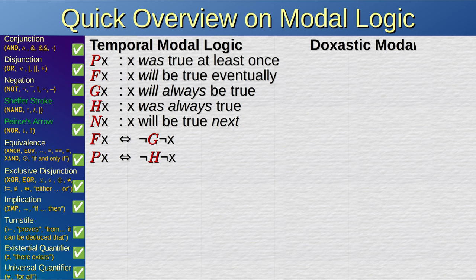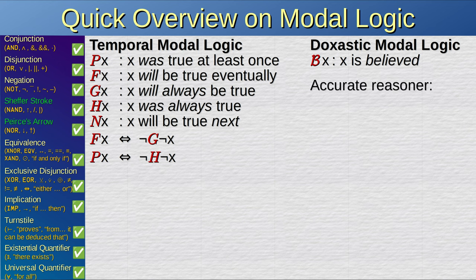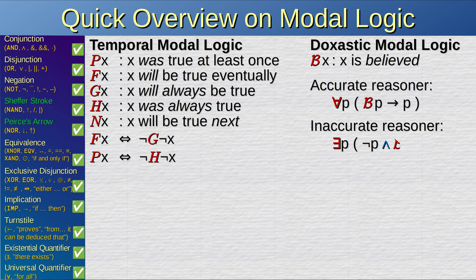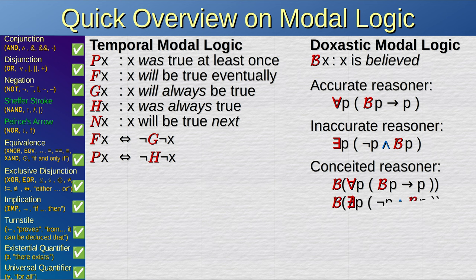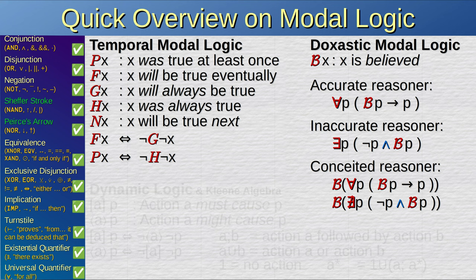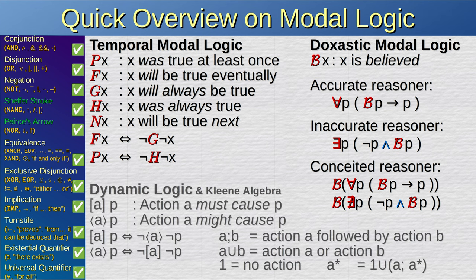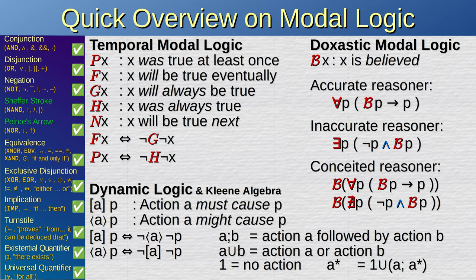In doxastic modal logic, bx means that it is believed that x is true. A reasoner is accurate when for every proposition, if they believe in it, it is true. A reasoner is inaccurate when there exists a false proposition that they believe in. A conceited reasoner believes that they are accurate, or that they are not inaccurate. However, I have not studied modal logic yet, so this series will not address these operators for more than this cursory glance.